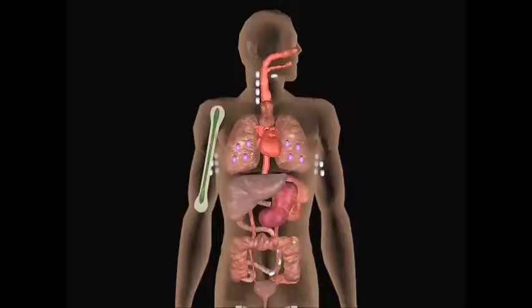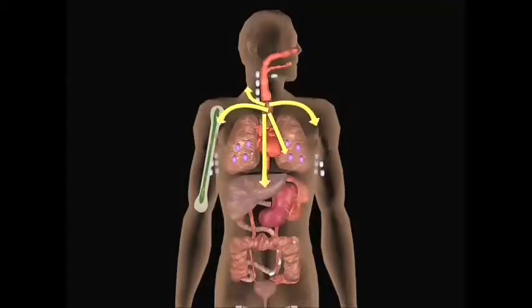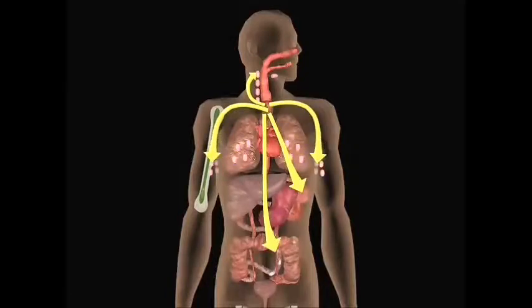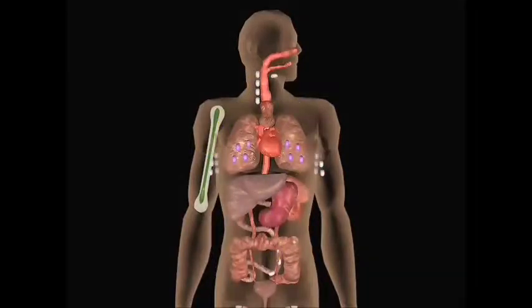After education within the thymus, T-cells circulate throughout the lymphatic system and accumulate inside the lymph nodes, spleen, and other secondary lymphoid tissues.